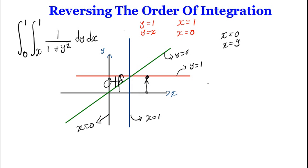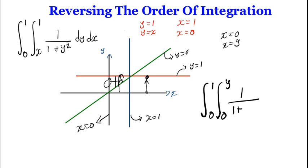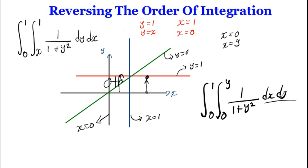We can now write the reversed order of integration. Instead of dy dx, we now have dx dy. In y we go from 0 to 1, and in x we go from 0 to y. The integrand 1 over (1 + y²) stays unchanged. So the reversed integral is: integral from 0 to 1, then 0 to y, of 1/(1 + y²) dx dy.